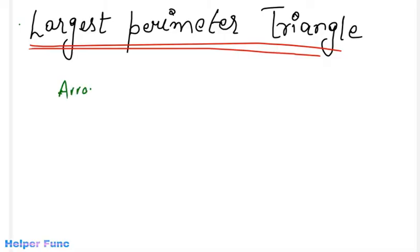The problem says that we are given an array of possible lengths. We need to return the largest perimeter of a triangle with non-zero area. Now this non-zero area means that basically the triangle should be formed with those three lengths that we will pick.